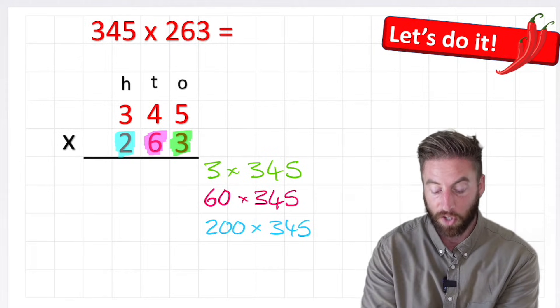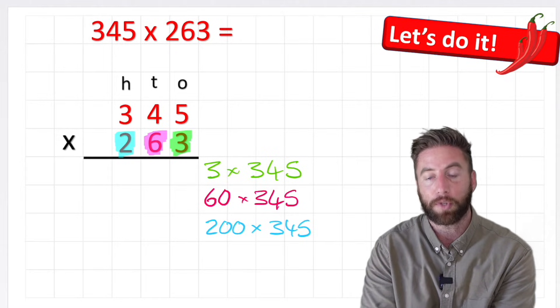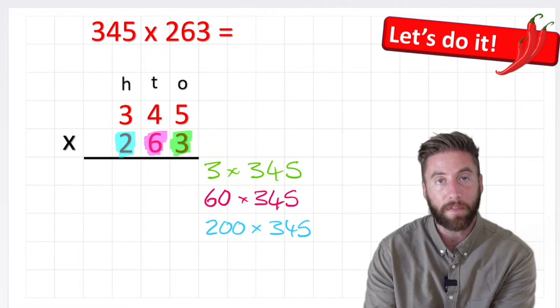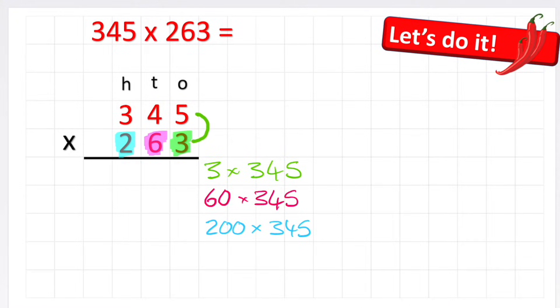Now we're going to partition the 345 step by step too. My first question is actually going to be 3 multiplied by this 5, and 3 multiplied by 5 is 15. But I can't put 15 like this in one column, so what do I have to do? That's right, I'm going to put my 5 in here because 15 gives me 5 ones, but I'm going to put my 1 for my 10 just up in this little box here, ready to be added to that column in a moment.